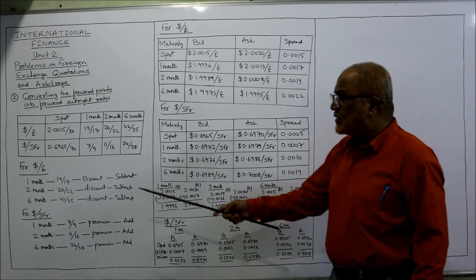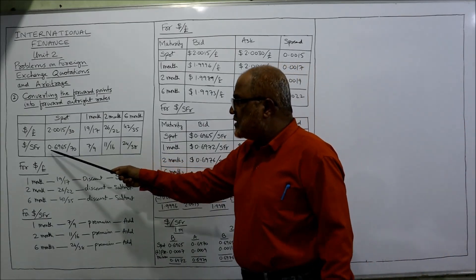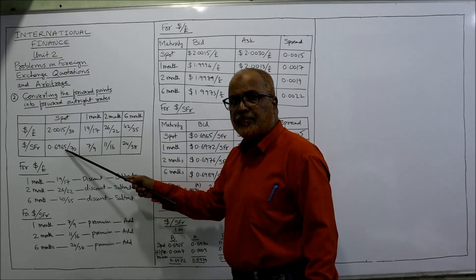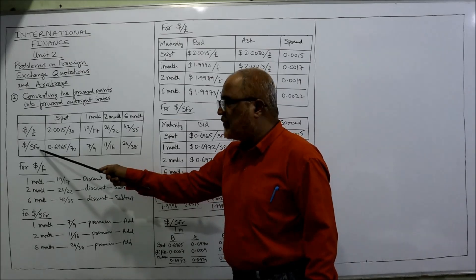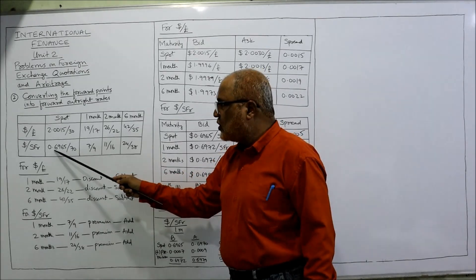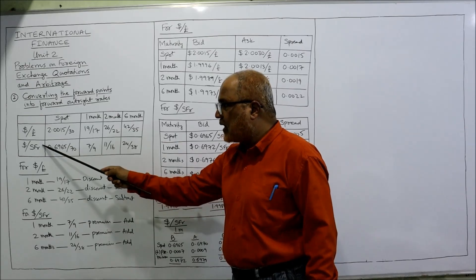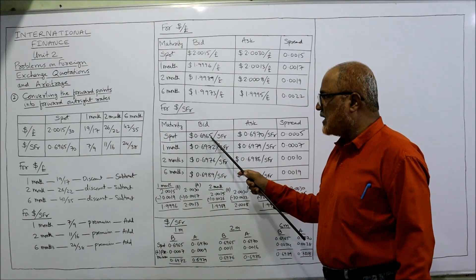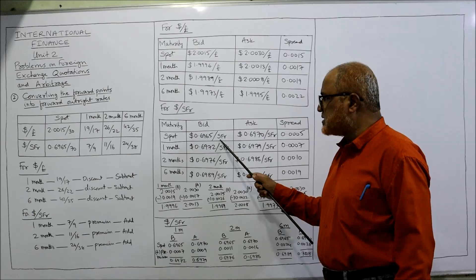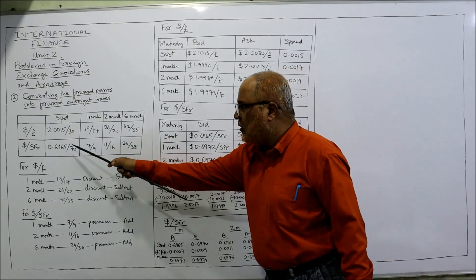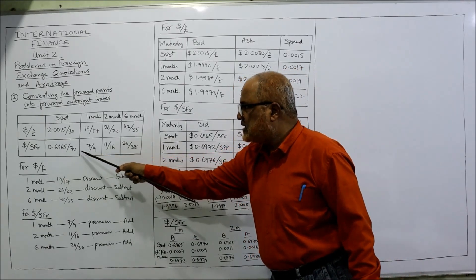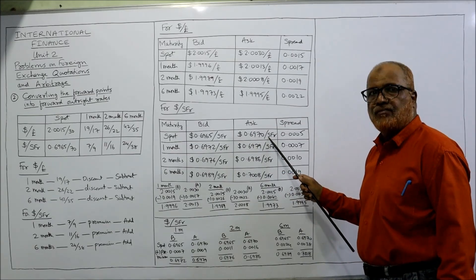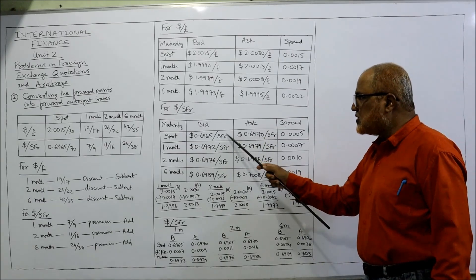The spot rate for dollar per SFR: bid rate is 0.6965 and ask rate is 0.6970.